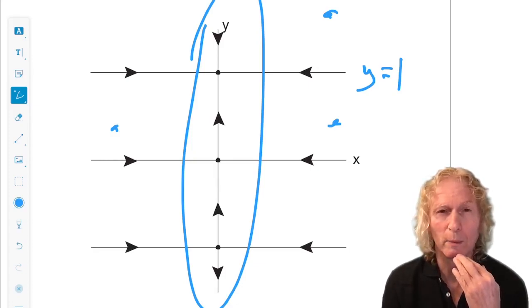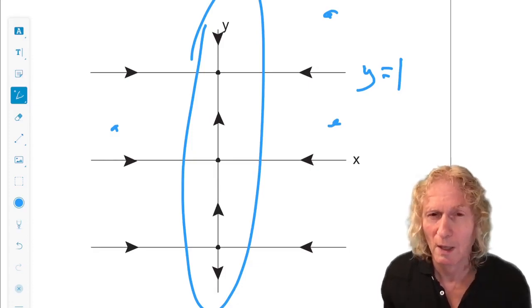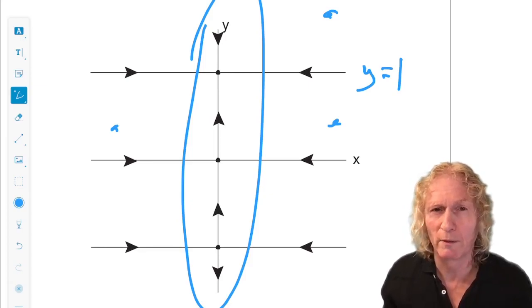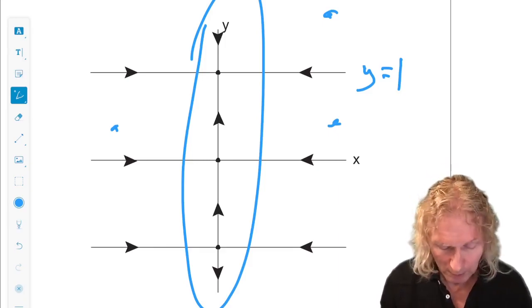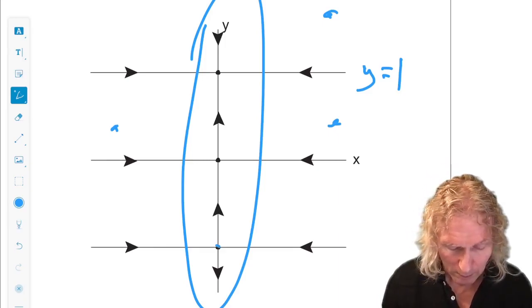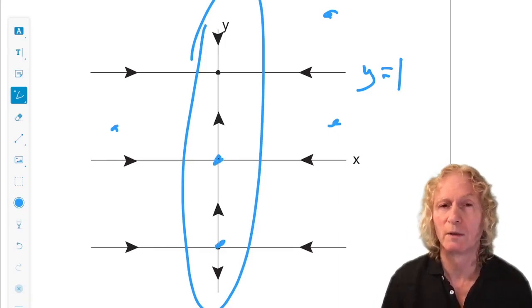But, look also what we have. It's an attracting set, but it has unstable objects within the invariant set.